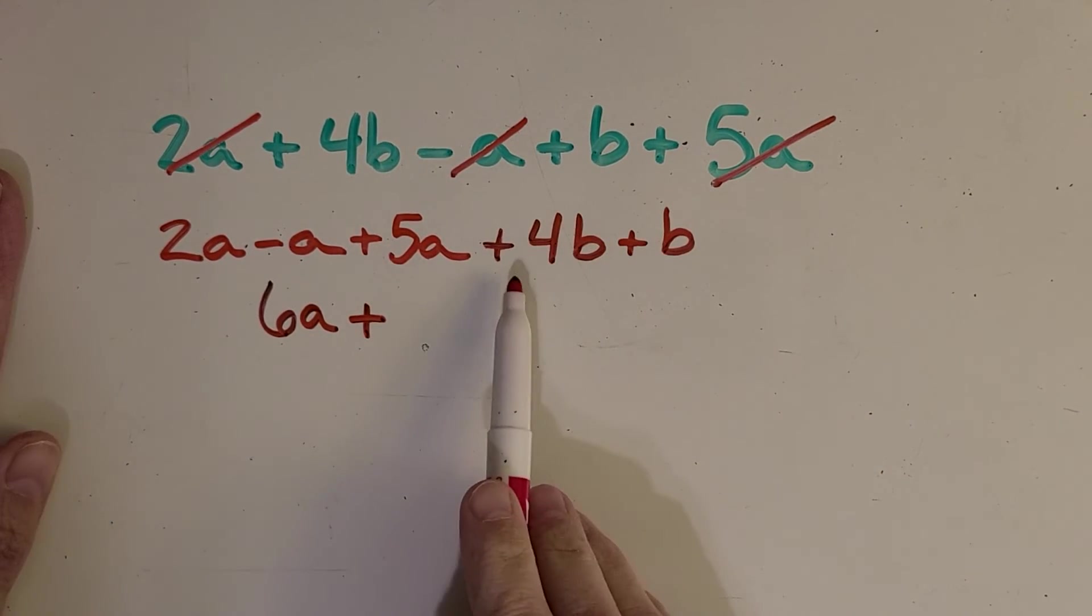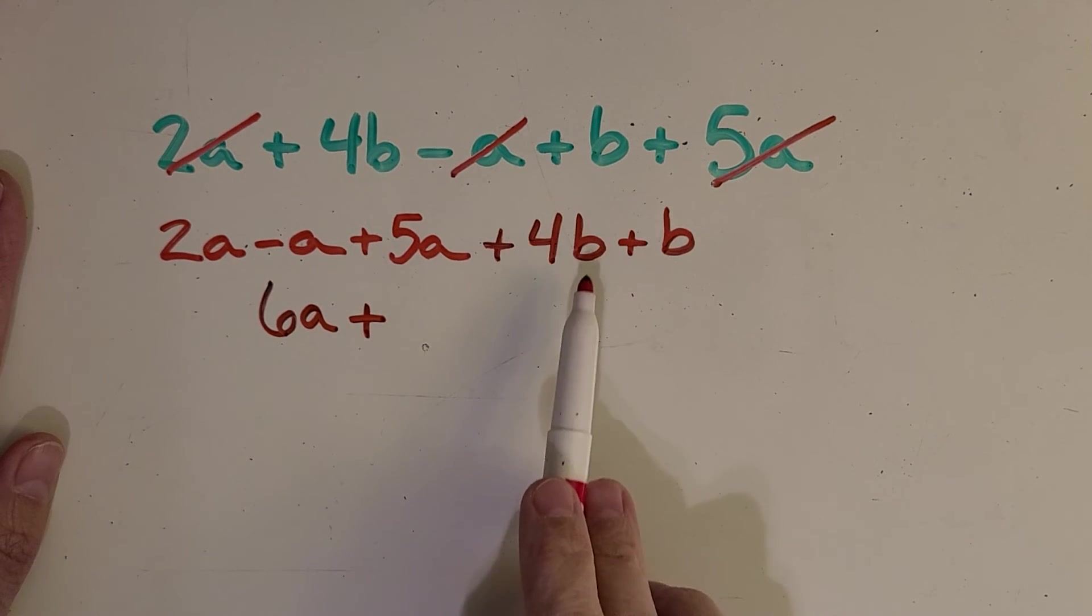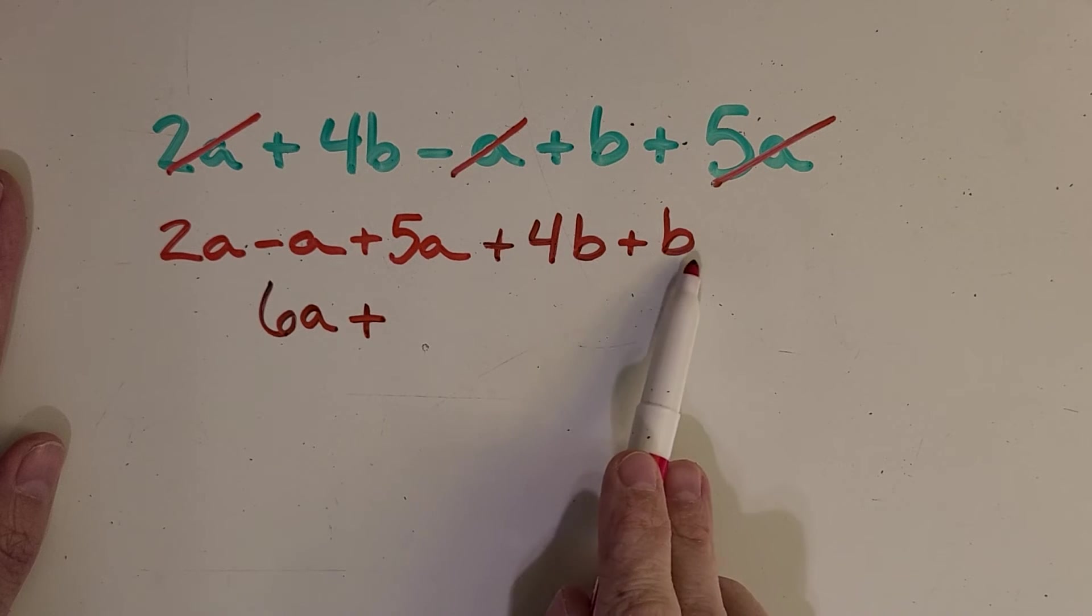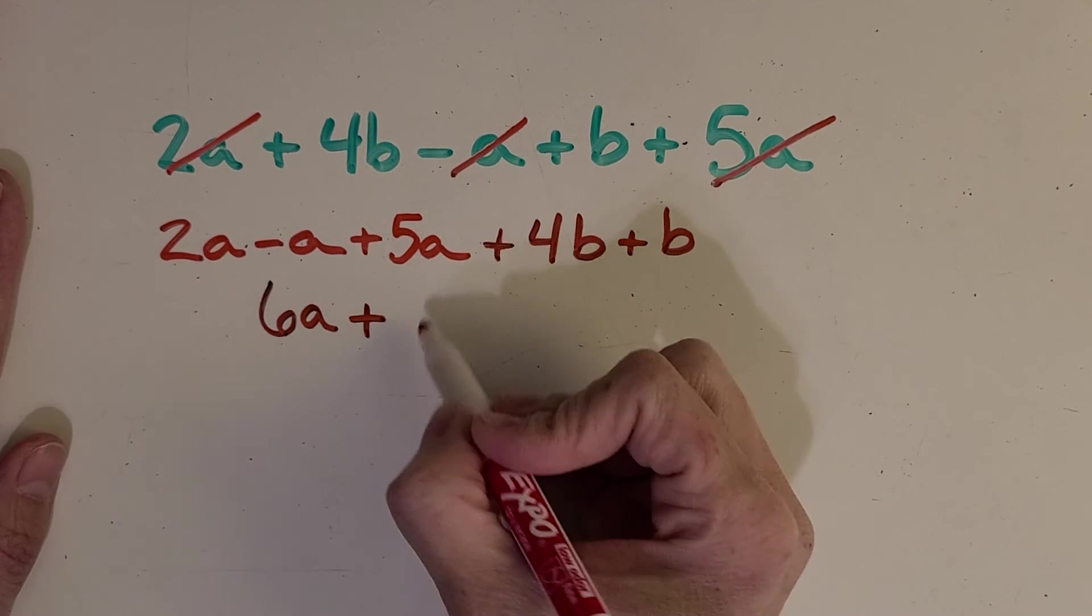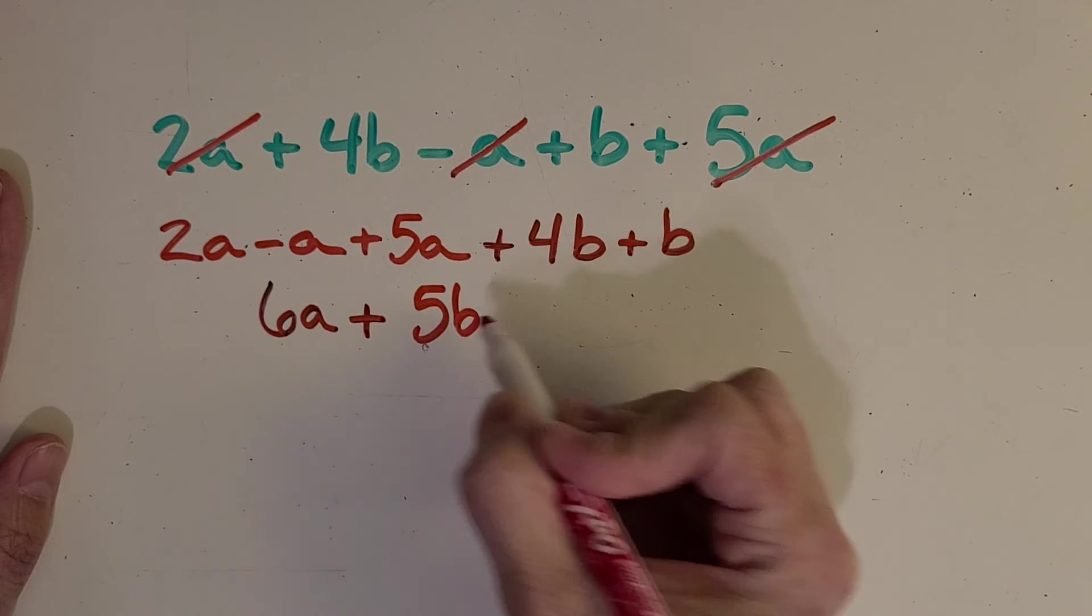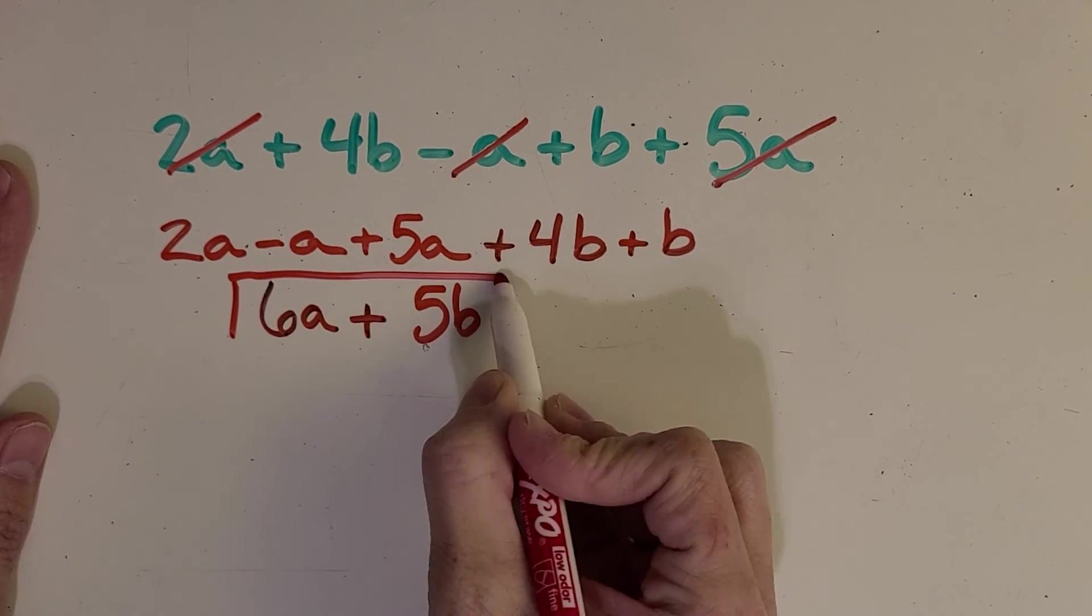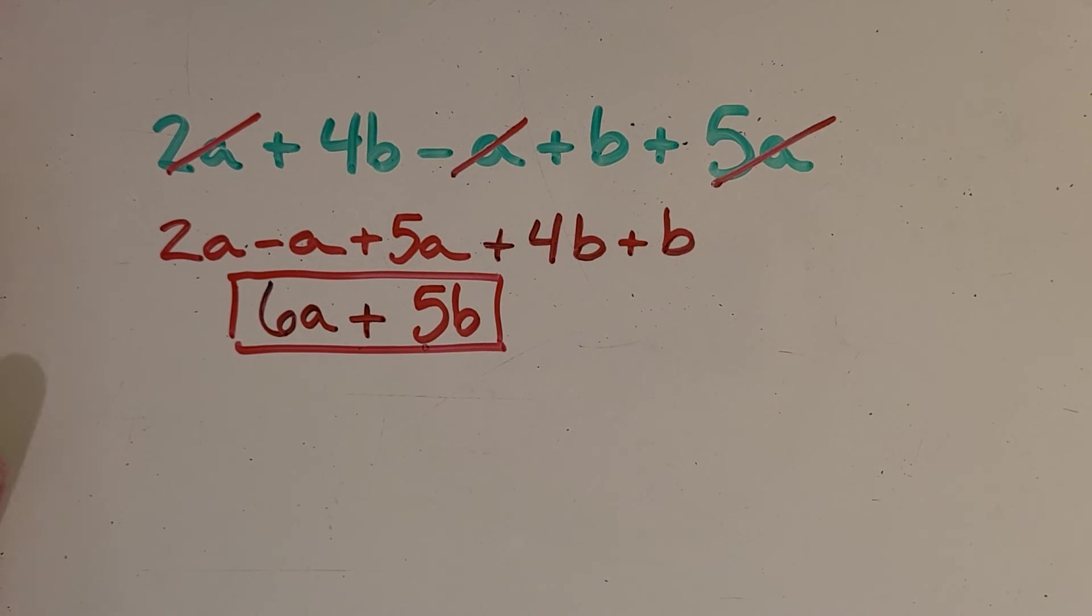Okay, now I see a plus sign there, so I'm copying it down, and then I'm going to combine these two. Four B plus we just said that was one of those. Good, 5B. Okay, and that's as much as you can simplify it. Great job.